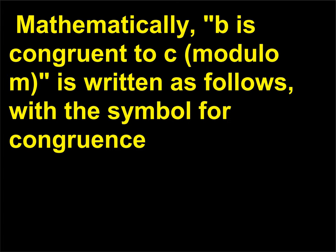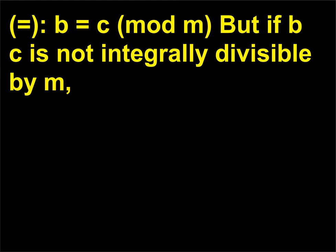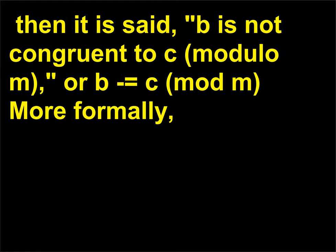Mathematically, b is congruent to c modulo m, written with the symbol for congruence: b ≡ c mod m. But if b minus c is not integrally divisible by m, then it is said b is not congruent to c modulo m, or b ≢ c mod m, more formally.